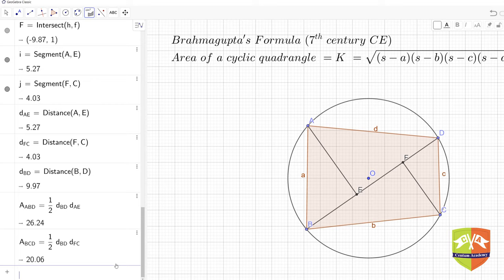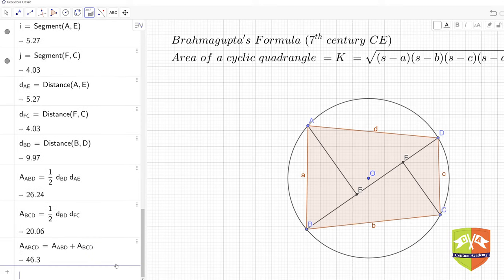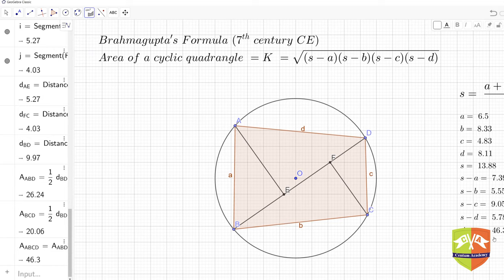So the total area of quadrilateral ABCD will be area of ABD plus area of BCD. If you add them, the value I'm getting is 46.3. Let's check what was the value from Brahmagupta's formula - 46.3. See, it matches!